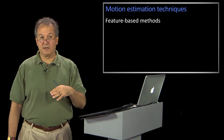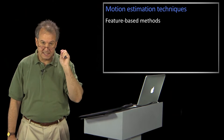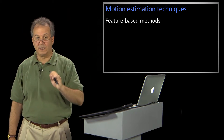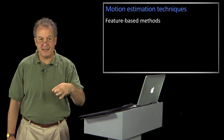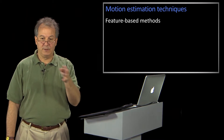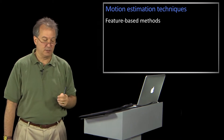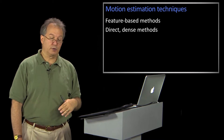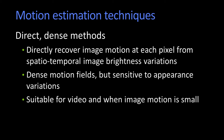The first one that we mentioned was feature-based methods, where you detect, describe, and locate features in your subsequent frames. And we've done a bunch of that in looking at how we do the SIFT stuff and panoramas and those kinds of things. But the other methods were called direct or dense methods, and that's what we're going to be focusing on today.